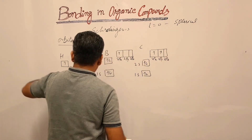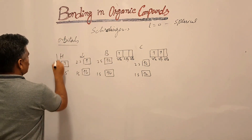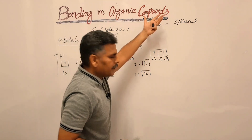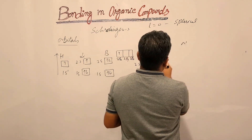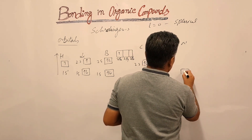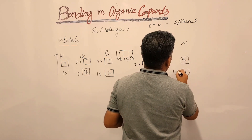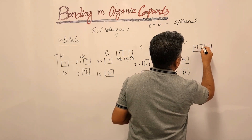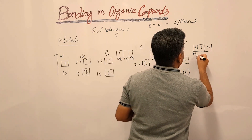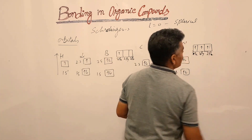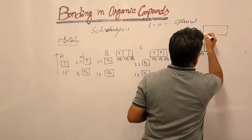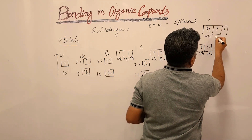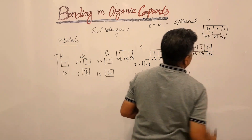Energy increases going from 1s to 2s to 2p and onward. The lowest energy is 1s, then 2s, then 2p. For nitrogen: 1s2, 2s2, and 2p3 — distributed as 2px, 2py, and 2pz. For oxygen: the same core configuration with 2px, 2py, and 2pz filled accordingly.